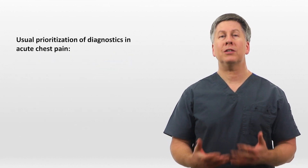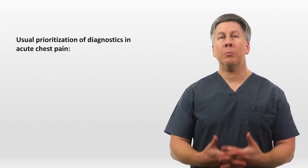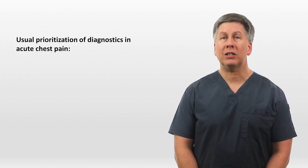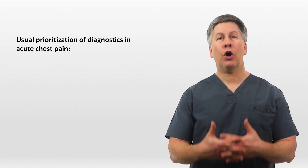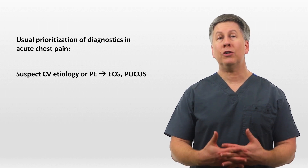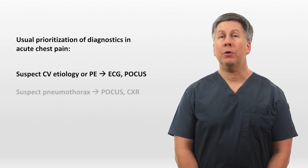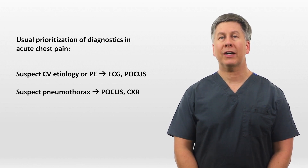When dealing with an acute crisis at the bedside, you need to consider how to prioritize diagnostic tests when there are a limited number of hands available and limited physical space around the patient. If you suspect a cardiovascular etiology or pulmonary embolism, start with an ECG and ultrasound. If you suspect a pneumothorax, start with an ultrasound and a chest x-ray.